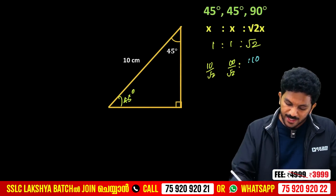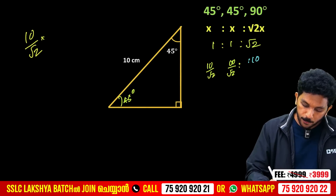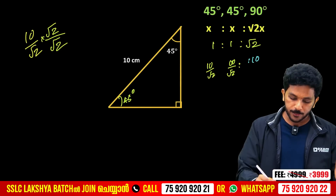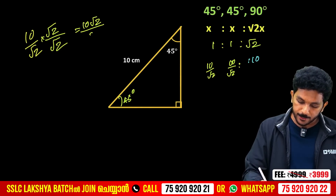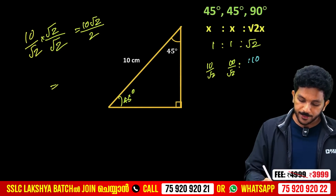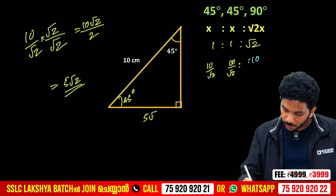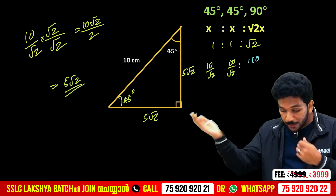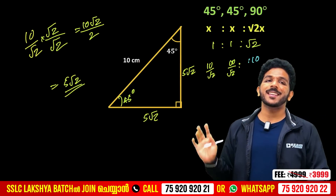10 by root 2 is not in simplified form, so we multiply by root 2 over root 2. The answer becomes 10√2 divided by 2, and 10 divided by 2 is 5. So 5√2 is the correct answer.